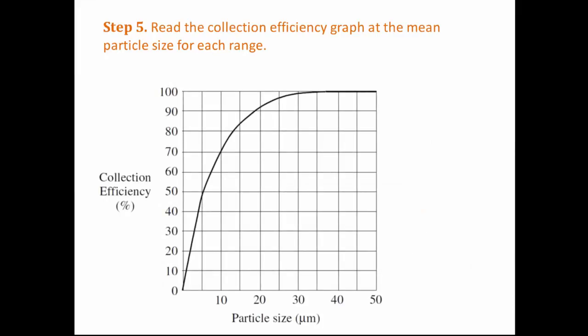To fill in the next column, we need to use the collection efficiency curve. We use the curve to find out how many of the particles in each range would be collected by the cyclone. For each size range, we read off from the graph what the collection efficiency is at the mean size. For example, for the size range of 10 to 20 micrometres, we read off at 15 micrometres and we can see that 83% of the particles would be collected. We repeat this process to fill in the whole column.